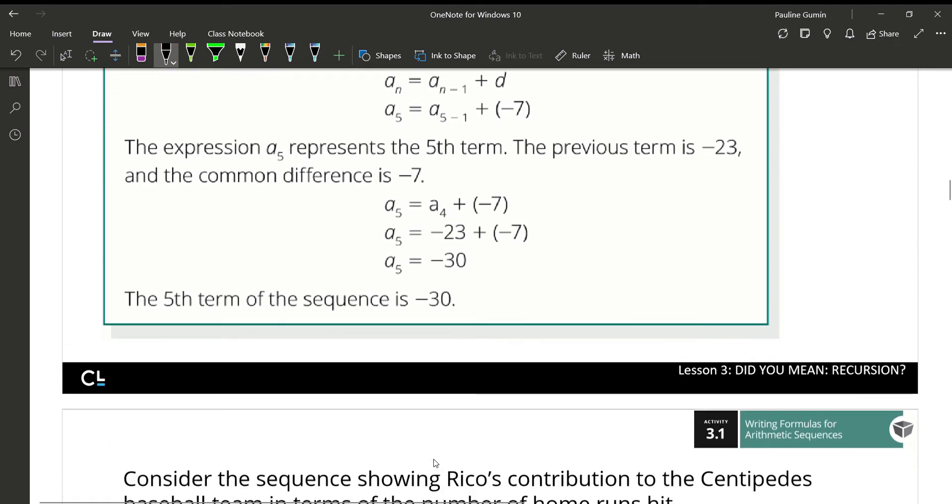Okay. So, to find the term I want, I need to use the previous term and add the common difference. Okay. So, we're trying to find the 5th term, which means I need to use, I know that's a funky looking equal sign, but that's fine. I use the 4th term and I add the common difference, which is 18.